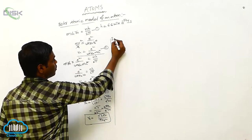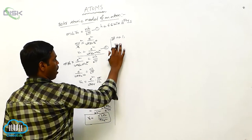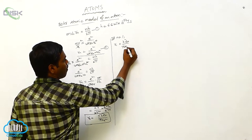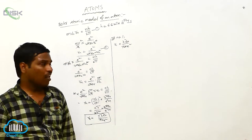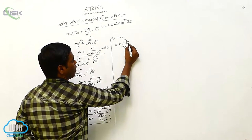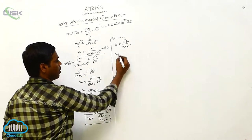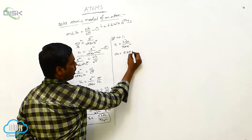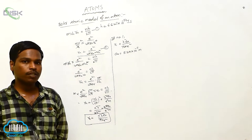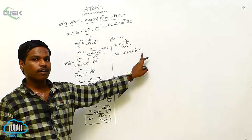If we write n = 1, then r1 = h² ε₀ / π m e². If we substitute all the values — h, ε₀, π, m, and e — then we get r1, which is called a₀, the Bohr radius of the electron. a₀ = 5.29 × 10⁻¹¹ meters. This is the Bohr radius.